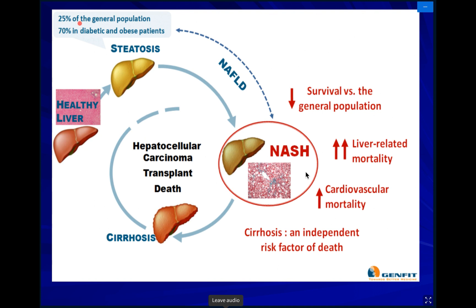25% of the general population have NAFLD, and 70% of diabetic and obese patients have NASH or NAFLD. So fatty liver is increased in diabetic and obese patients. This pathway shows a healthy liver developing steatosis, which leads to NASH, increased fibrosis and cirrhosis, and increased mortality rate.